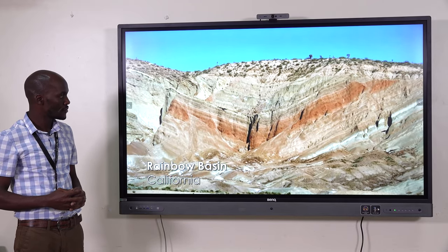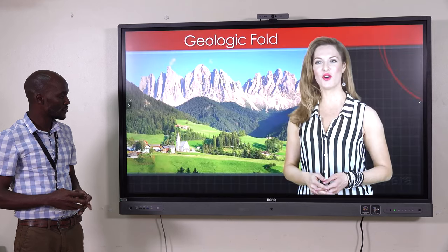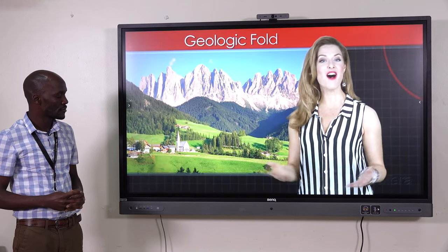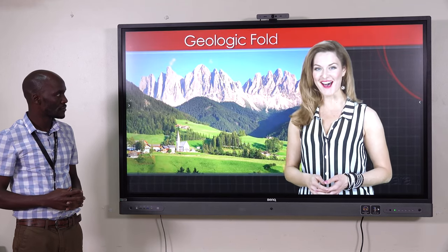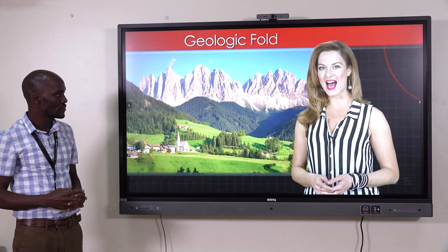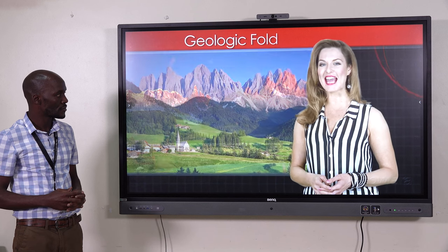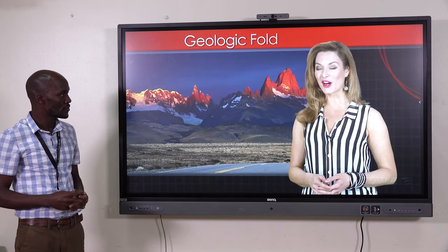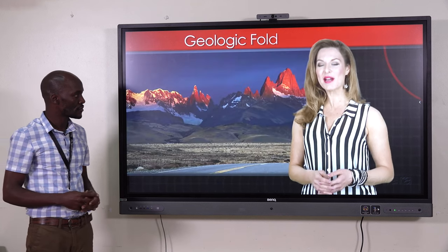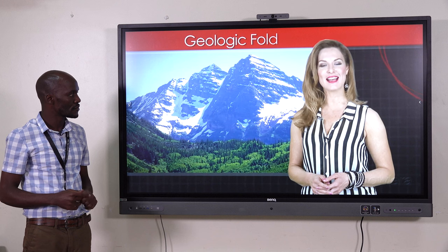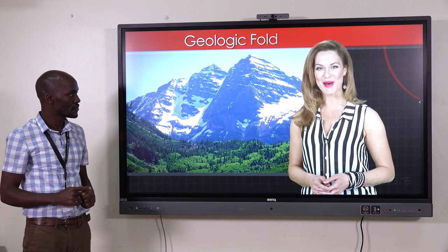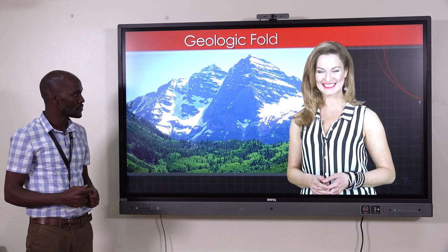Structures formed by geological folding are found all over the earth and can be of any size. The Alps in Europe, the Andes in South America, and America's Rocky Mountains are all examples of mountains that have been formed by folding.